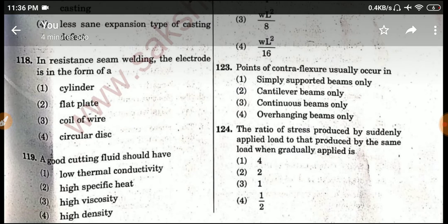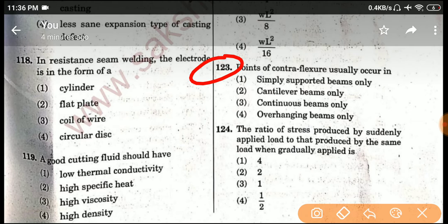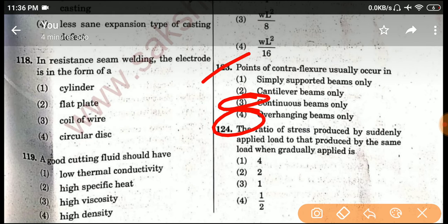Question number 123. Points of contraflexure usually occur in...the correct options are 3 and 4. So if you tick any of these two options, you will get one mark. This is also included in the final key.